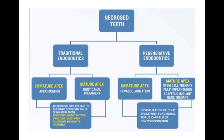Regenerative endodontics helps in increasing the thickness of the dentinal wall, increasing the strength of the teeth, and preventing fracture. For an immature apex, you can go for a revascularization procedure. There are also stem cell therapy, pulp implantation, scaffold implants, and gene therapy. The best treatment option for an open apex is now revascularization — not apexification. If you find a revascularization option, go for it; the second best option can be apexification.